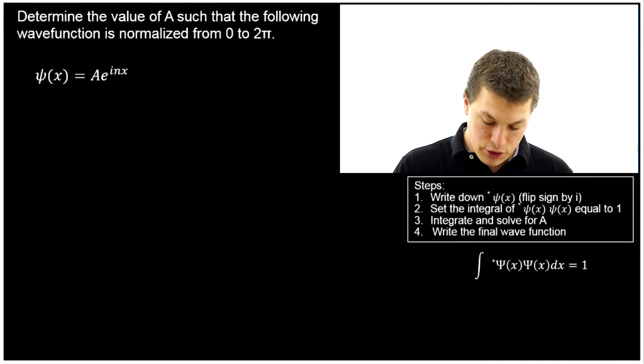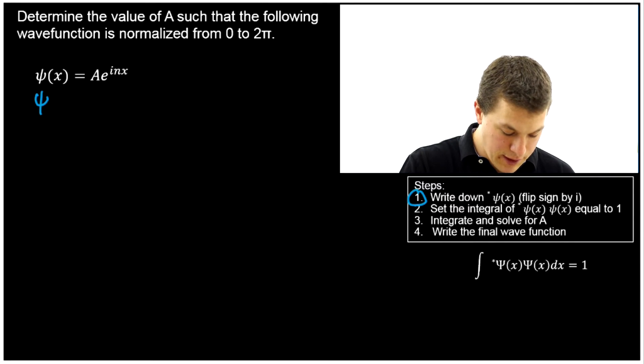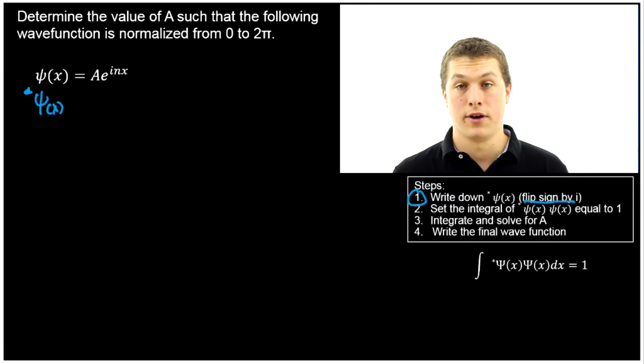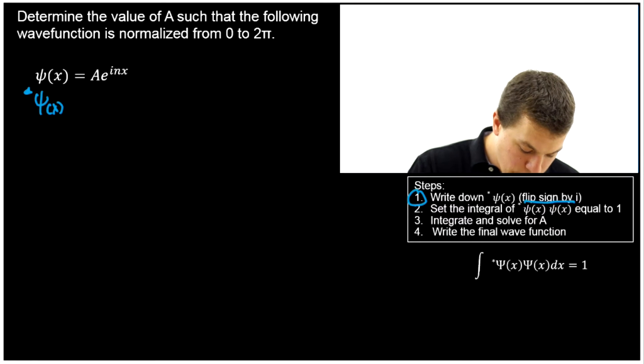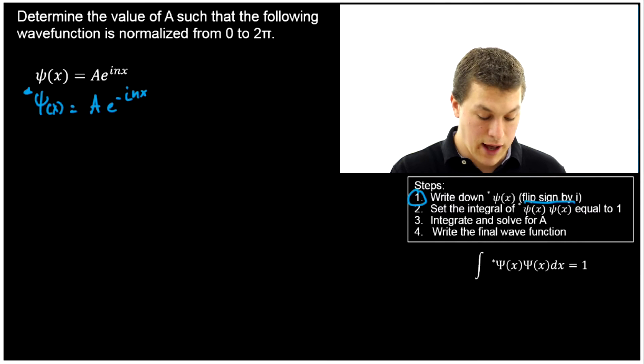So the first step we're going to do is we're just going to write down our complex conjugate. That turns out to be a pretty easy step. How do we do it? All we do is we flip the sign of i. So if I see a negative i, I'm going to write a positive i. If I see a positive i, I'm going to write a negative i. Notice in our problem here we have a positive i, which means our complex conjugate is going to have a negative i. So it's going to give us -inx.